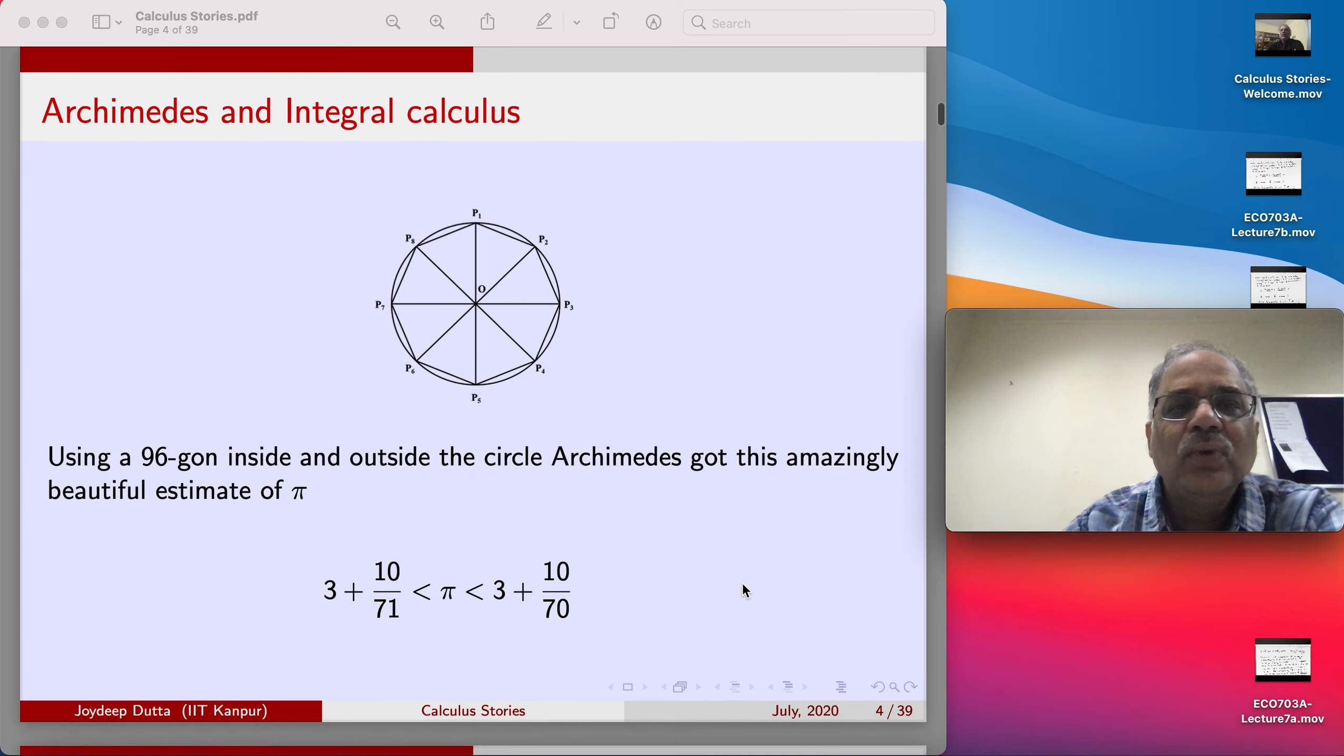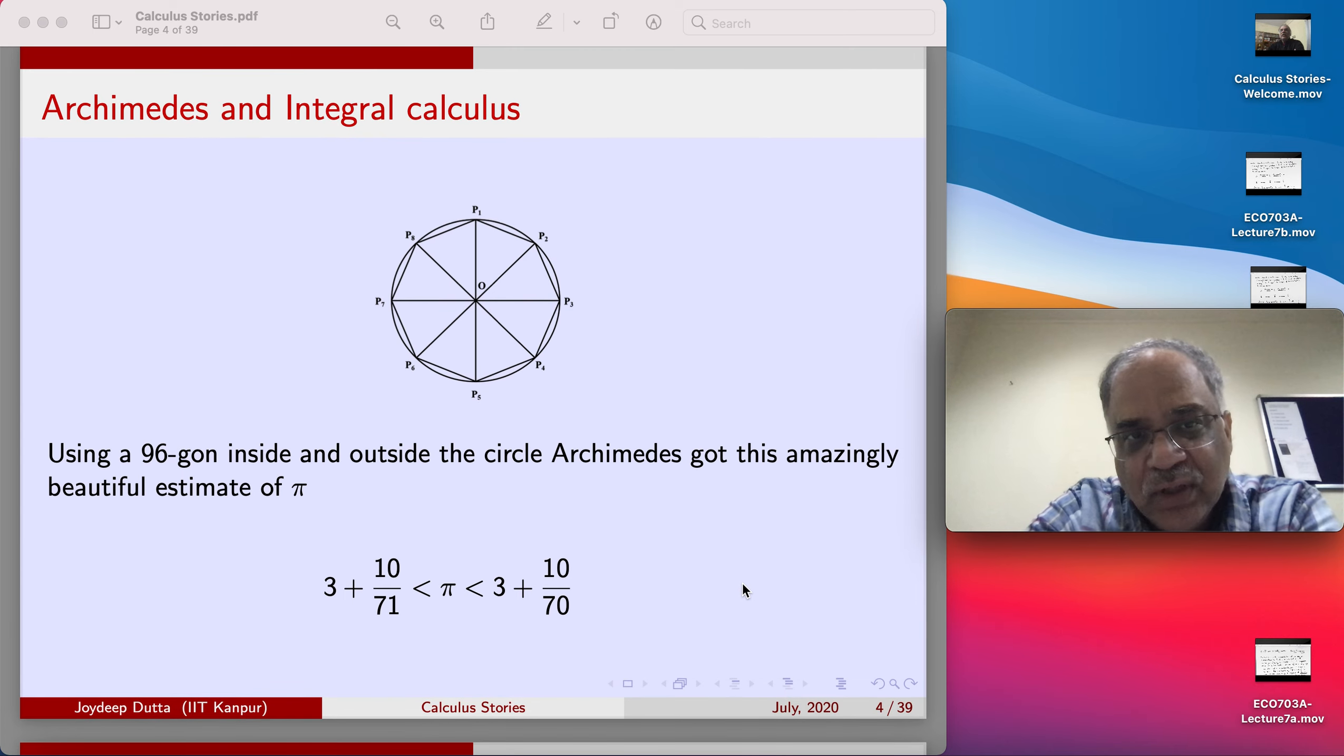So what did Archimedes do? How did he find the area of a circle? Euclidean geometry is the key to everything. This is the foundation of all modern mathematics, that is the way I view it. Look at what Archimedes did: he took several points on the circle and then joined those points, and joined the n points, say P1 and P2, to O, the center of the circle, making so many triangles.